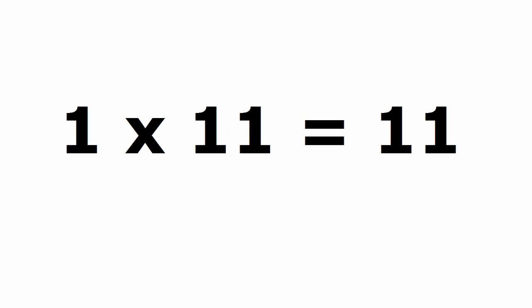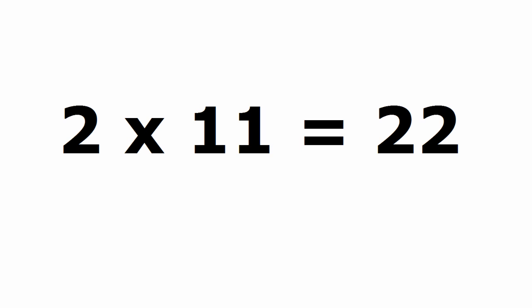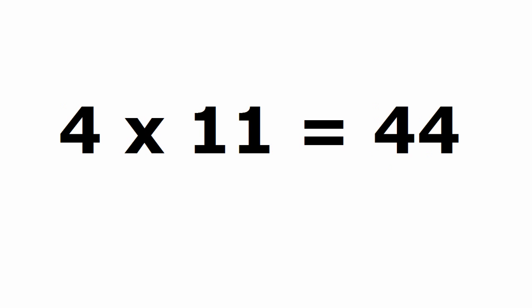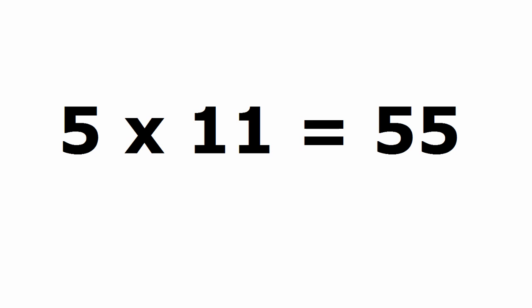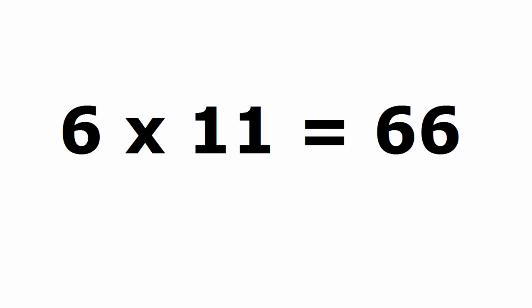One times eleven is eleven. Two times eleven is twenty-two. Three times eleven is thirty-three. Four times eleven is forty-four. Five times eleven is fifty-five.